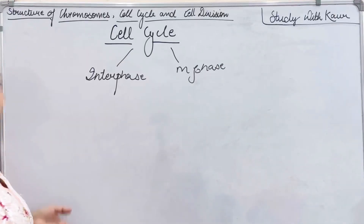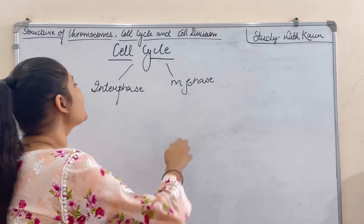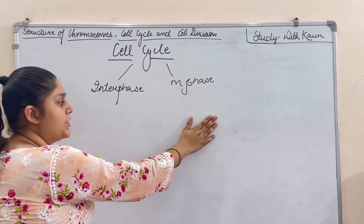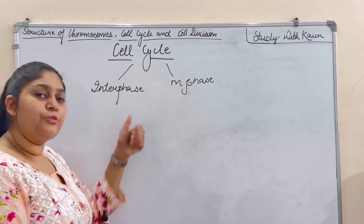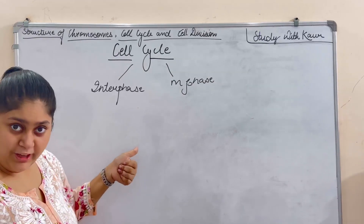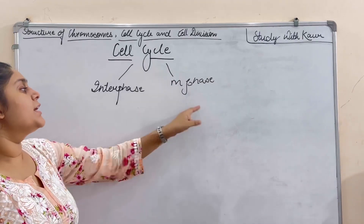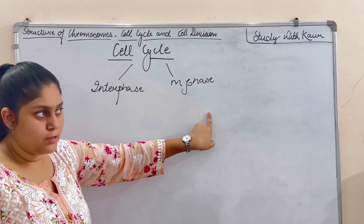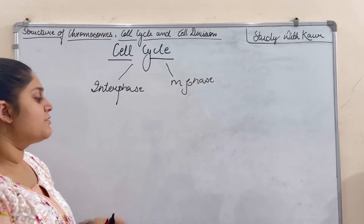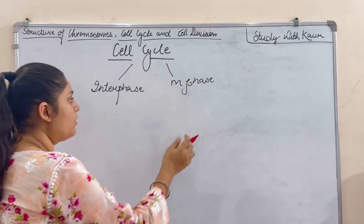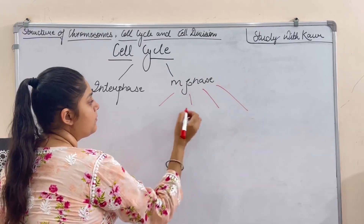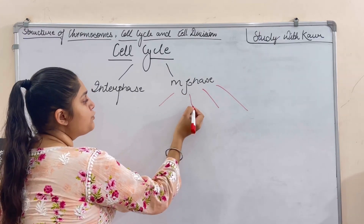The cell cycle is divided into two: interphase and M phase. Interphase is also known as the non-dividing phase, whereas M phase is known as the dividing phase. Now M phase is further divided into four sub-phases.